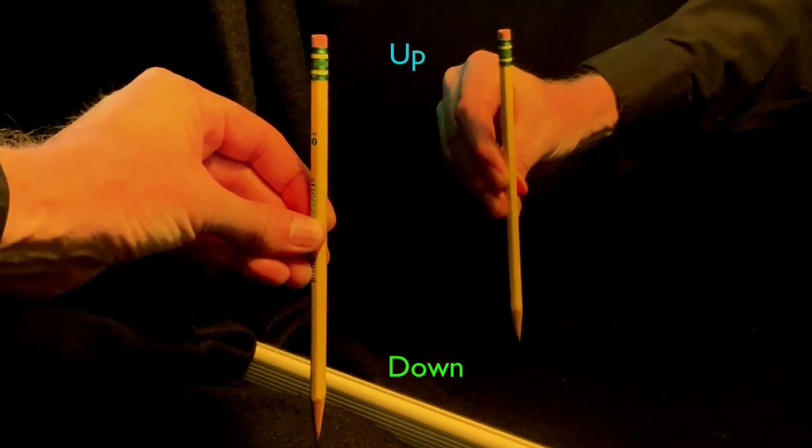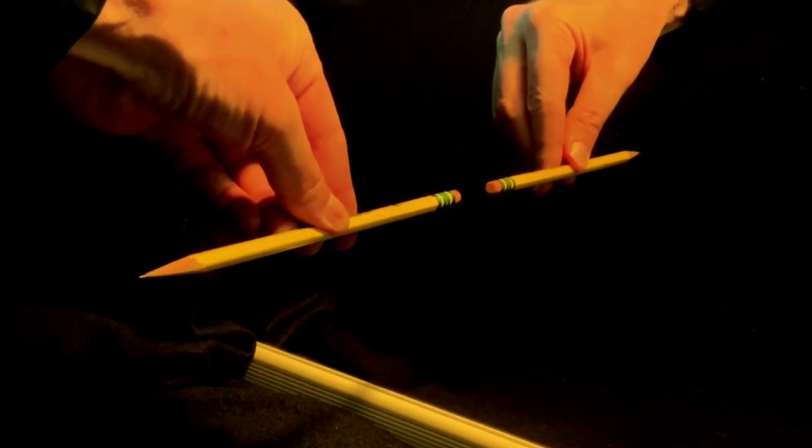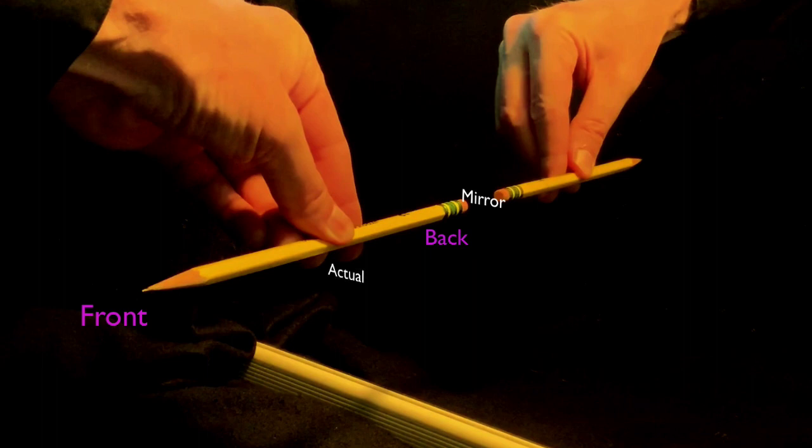But here's where it gets trippy. Hold the pencil perpendicular to the mirror, with the tip pointing toward you. Let's define the tip of the pencil as the front, and the eraser as the back. Notice how the back of the pencil is closest to the mirror. And notice how this is true for both the actual pencil and its mirror image.